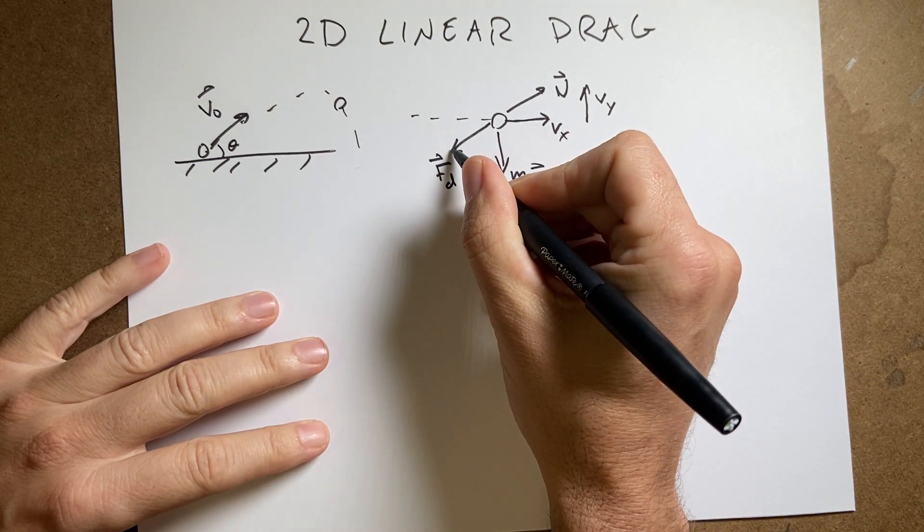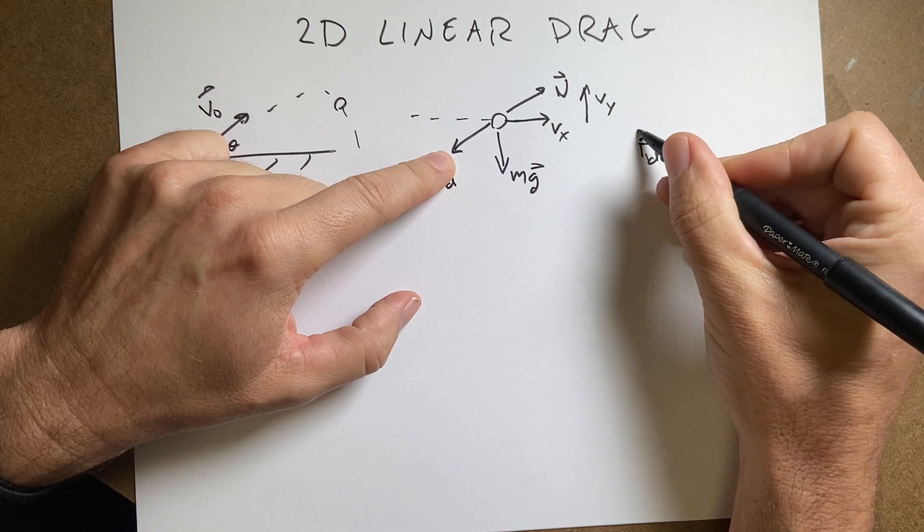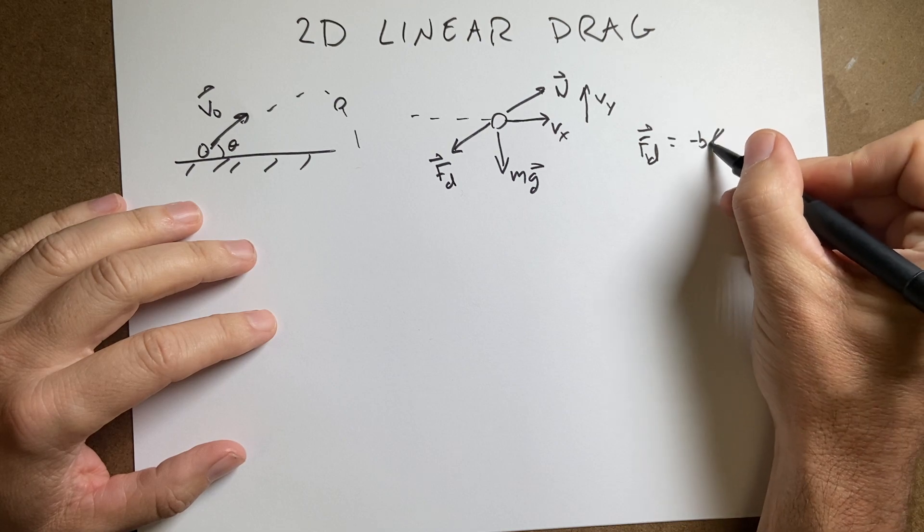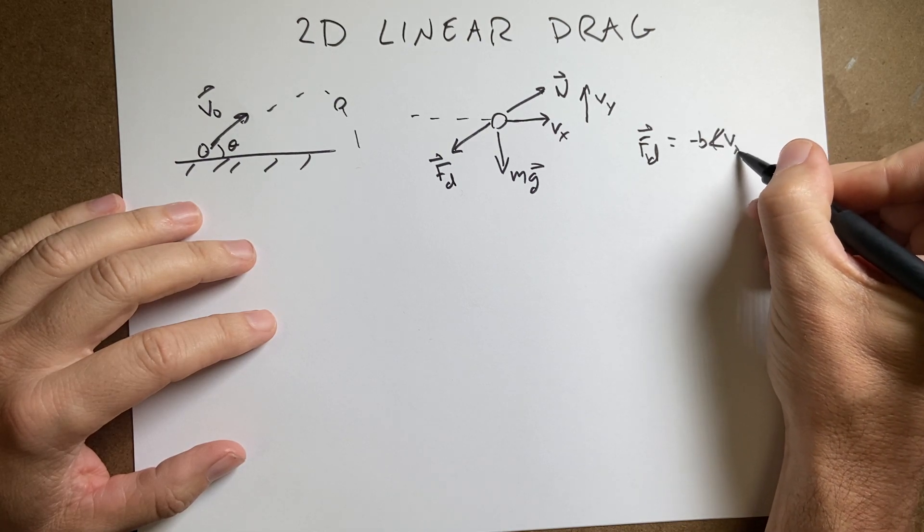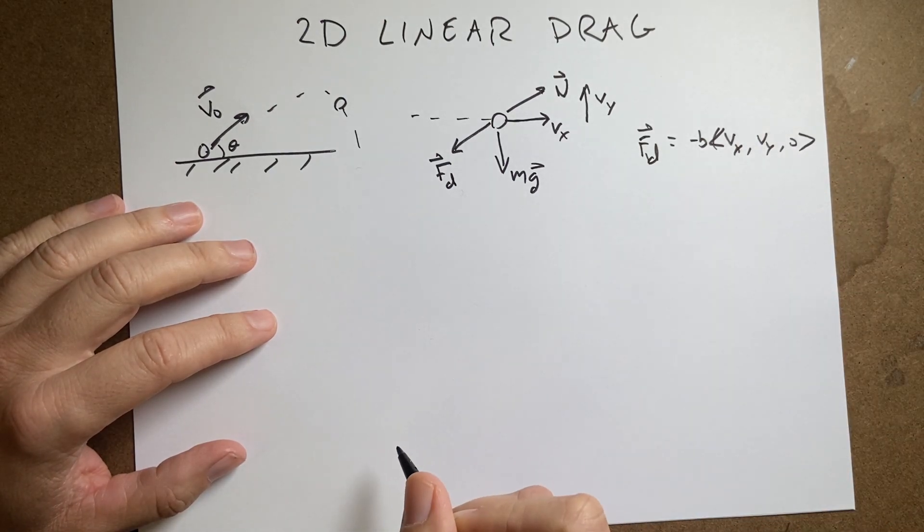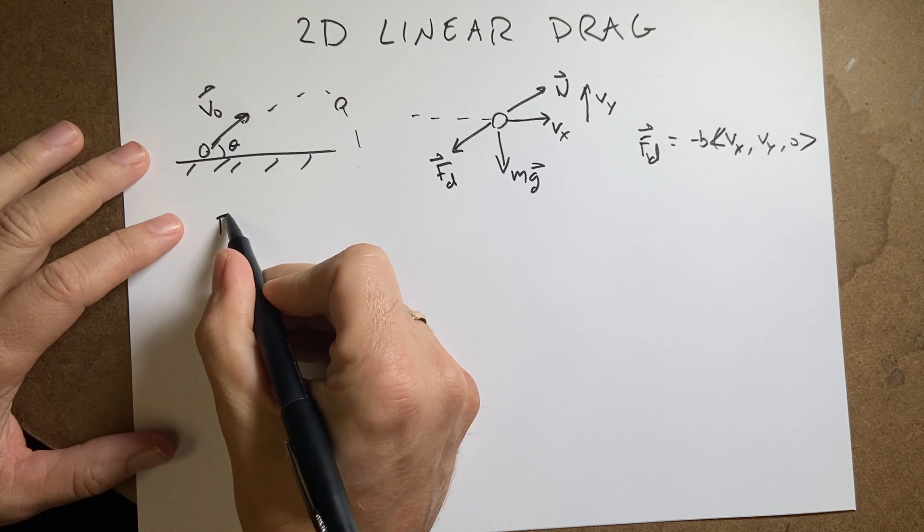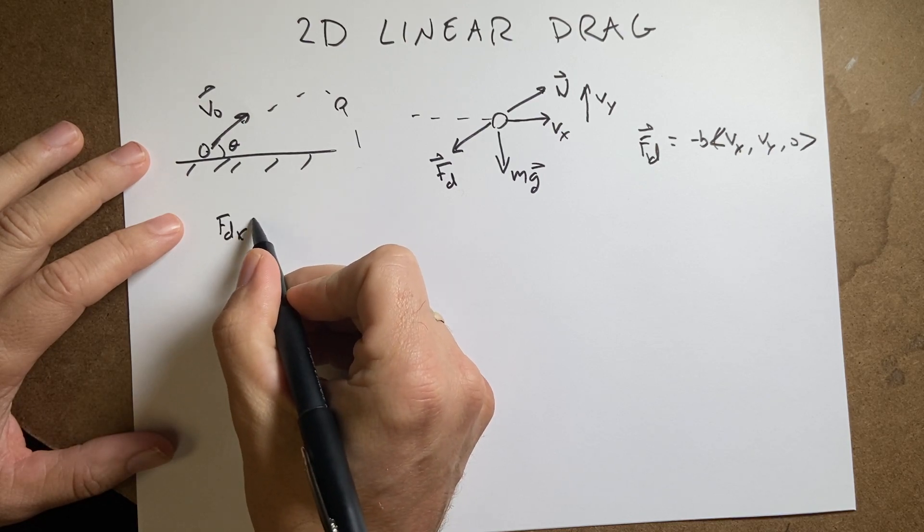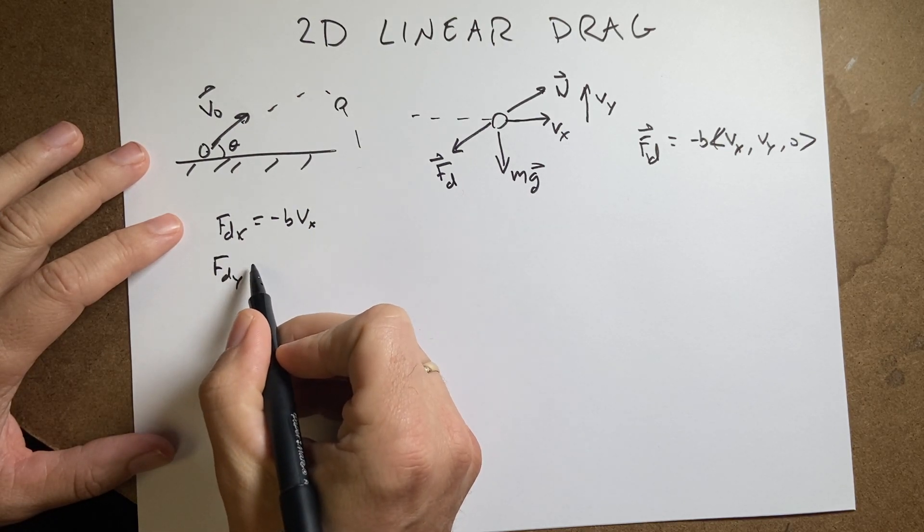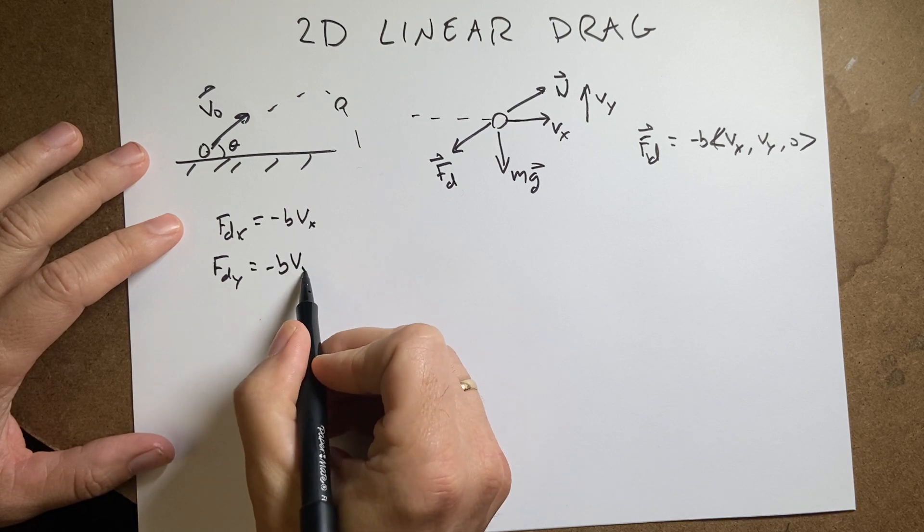And then so this is going to be, Vy is going to be equal to F drag. I can write F drag as negative B. Let's write it as the vector Vx, Vy, 0. And so that's my vector notation. So that means that FDx is going to be negative BVx. FDy, D stands for drag, is going to be negative BVy.